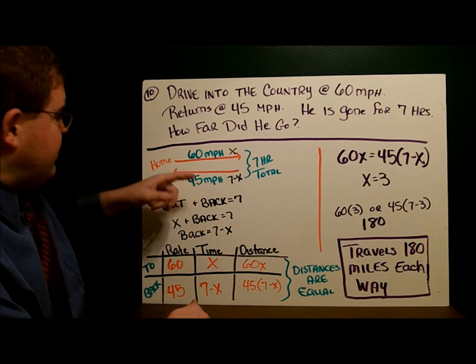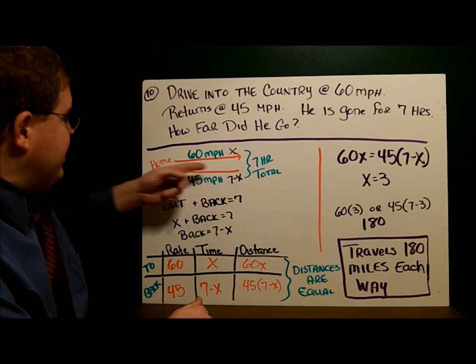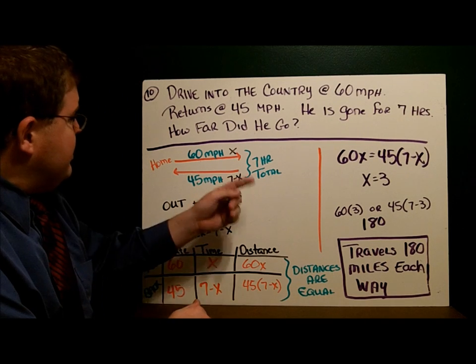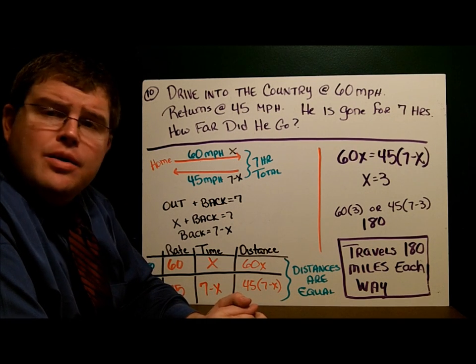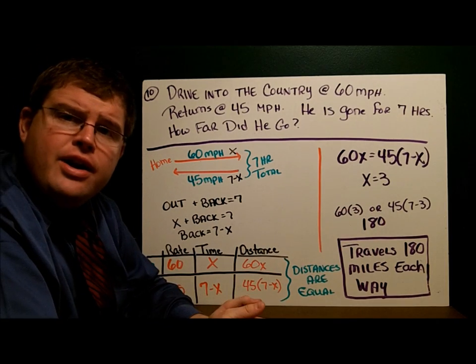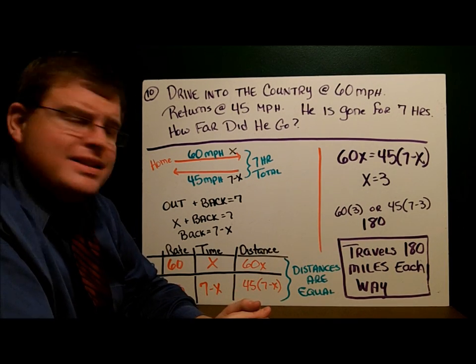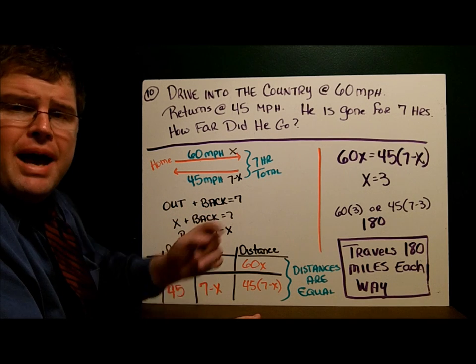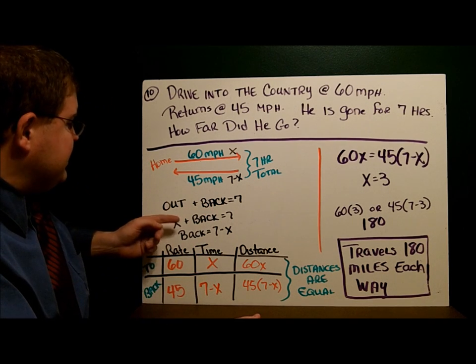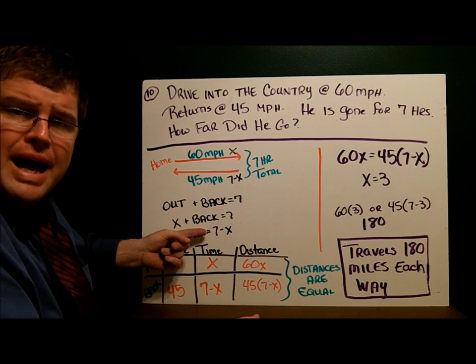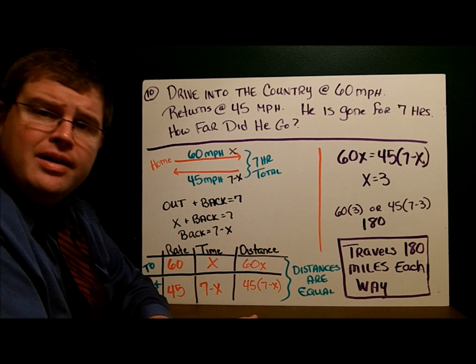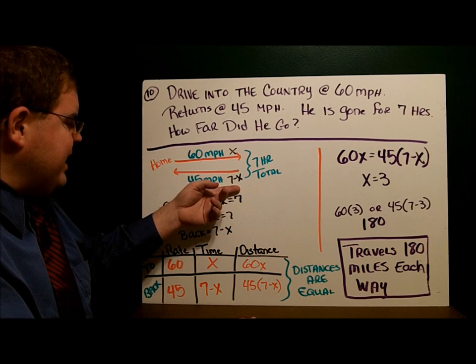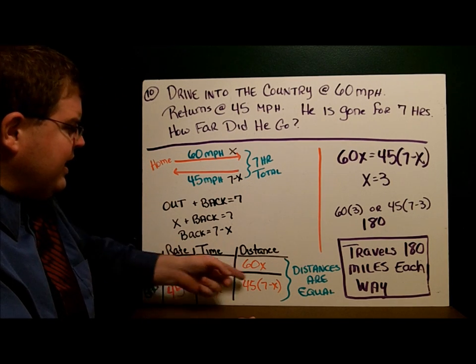Let's draw the picture. Here's home, here's out into the country. He went 60 miles per hour this way, 45 coming back home. He went for a total of 7 hours. We don't know how long he drove out, but we'll call that X. This is just like we did with the coins - the time out plus the time back equaled 7 hours. So X, the time out, plus the time back equals 7. The time back is 7 minus X. Coming back, 7 minus X hours. Fill in the table and the distances.